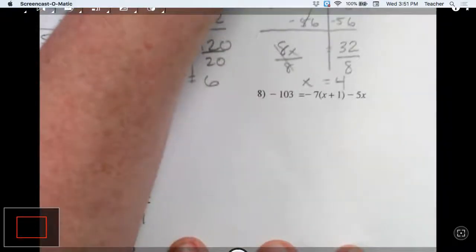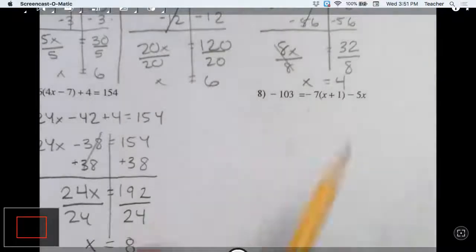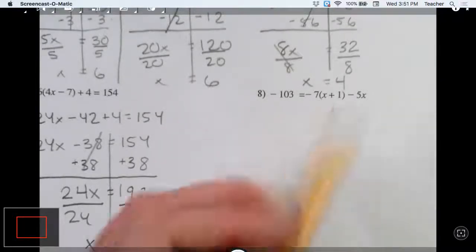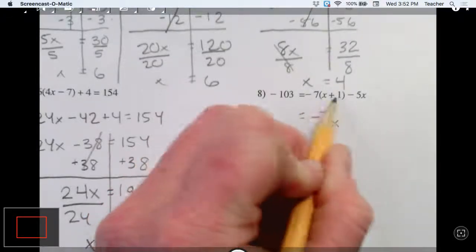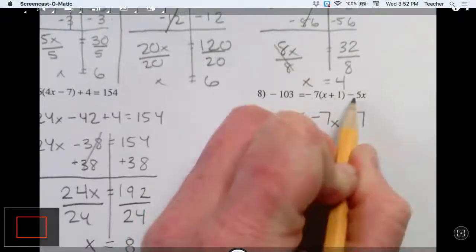All right. Next problem. This one's a little uglier. I'm going to have to simplify this side. So I have negative 7 times x, negative 7 times 1 is negative 7 minus 5x.